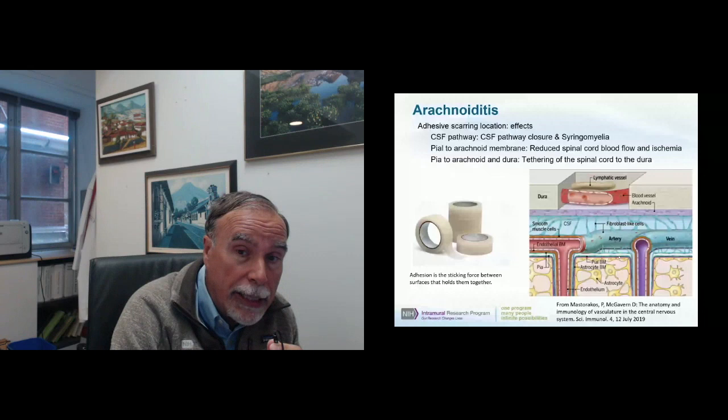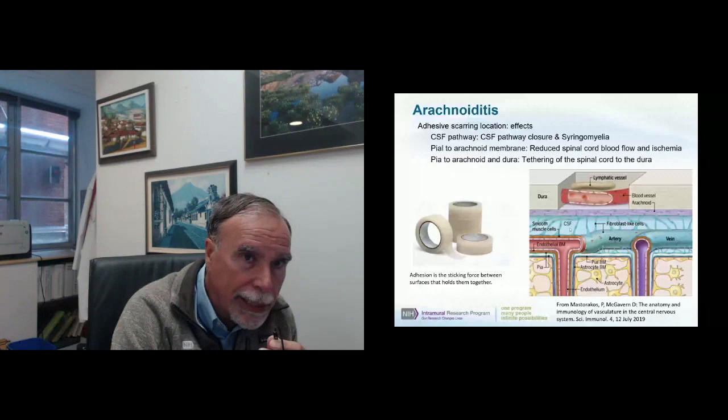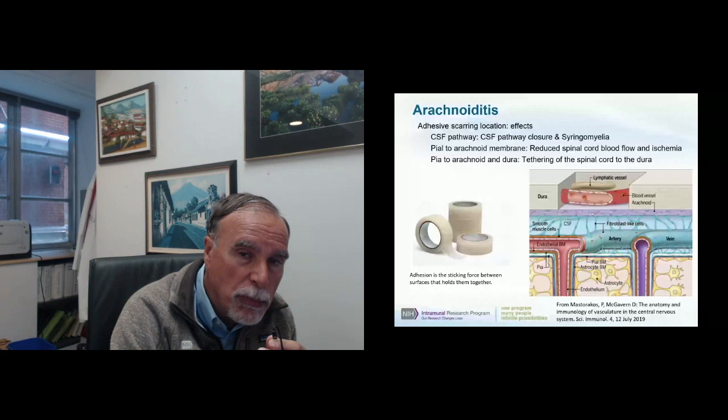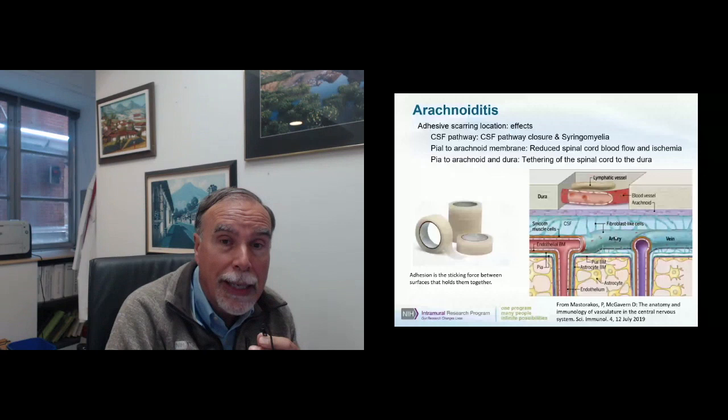The full name is really adhesive arachnoiditis — adhesion being the sticking force between surfaces. With arachnoiditis, the arachnoid is stuck to blood vessels and to the surface of the spinal cord. That sticking obliterates the CSF space, leading to syringomyelia. Scarring of the pia and arachnoid to the dura sticks the spinal cord to the dura, causing spinal cord tethering, and the adhesion of the arachnoid to blood vessels can obviously affect those blood vessels as well.